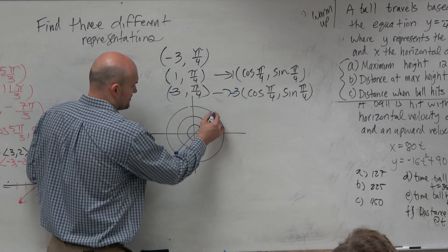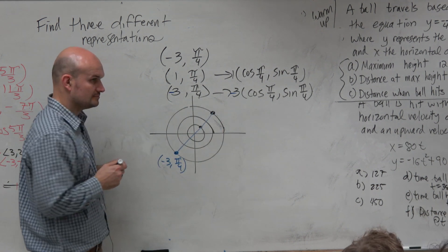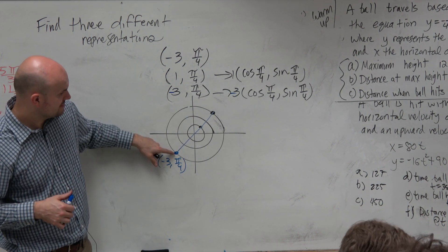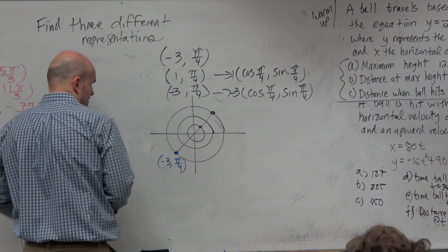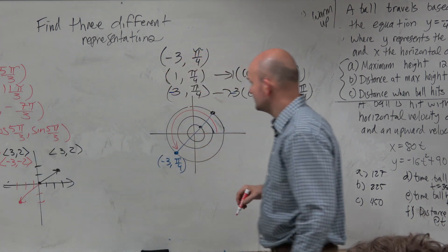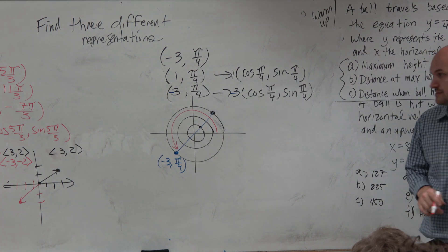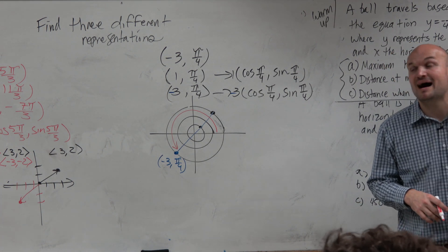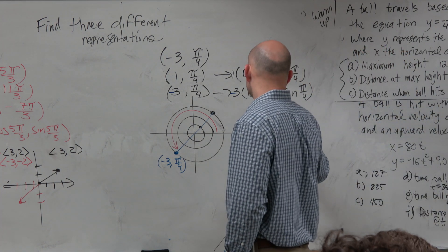Can we figure out some different representations for this point? So here's the point. Can we figure out what is this angle? Does anybody know what that angle is? 5 π/4. What is the radius? 3. Positive 3, right? So we could do positive 3, 5 π/4.